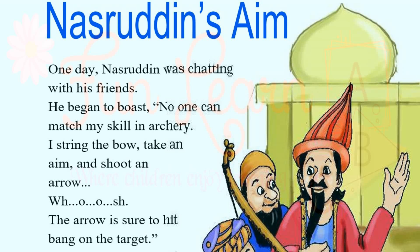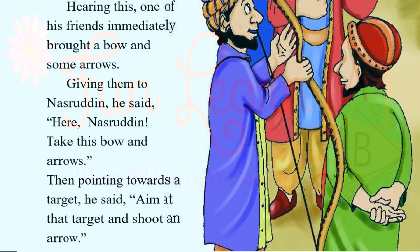One day, Nasiruddin was chatting with his friends. He was boasting: 'No one can match my skill in archery. I string a bow, take an aim and shoot an arrow — no one can beat me. I am so good that the arrow is sure to hit bang on the target.'